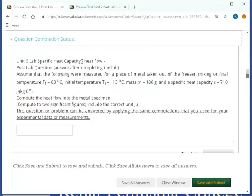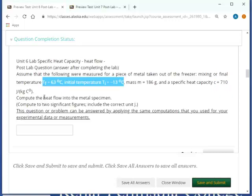This one here, of course, tests your knowledge using the equation that you needed to use. So specific heat capacity times mass times temperature difference will give you the heat flow in joules. Notice that when you do the computation, you need to convert the mass to kilograms.